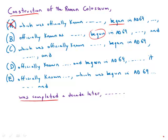Answer choice B has 'begun' — a participle — and participles are not in parallel to a verb, so that's incorrect. Answer choice C has 'begun in 69 AD and was completed,' which is perfectly correct and handles the parallelism properly.